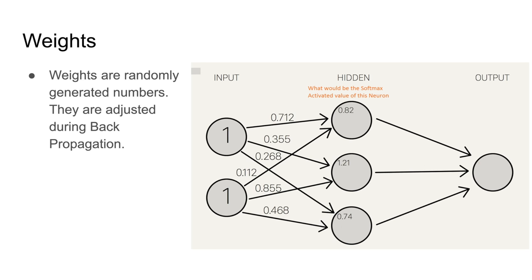Now, weights. Weights are essentially the connections between one layer to the next. Each node has multiple weights that connect to other nodes in the next layer. Weights are randomly generated numbers, and they are the ones adjusted during backpropagation — which is how the machine learning algorithm actually learns.